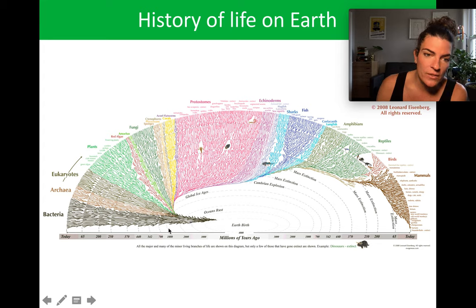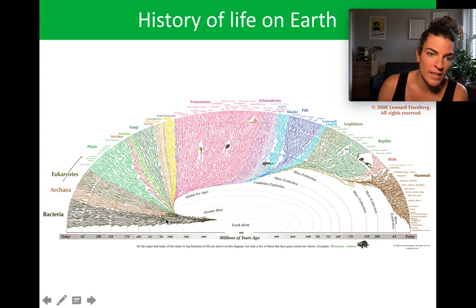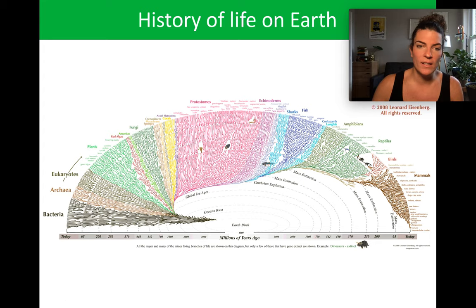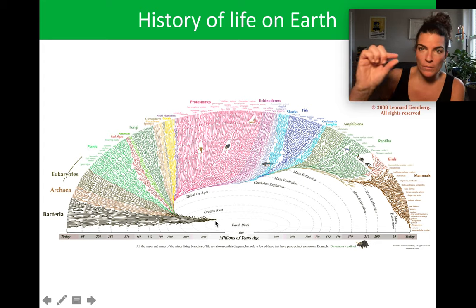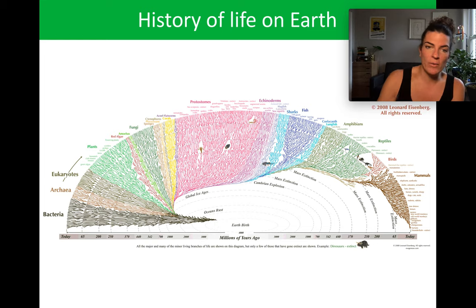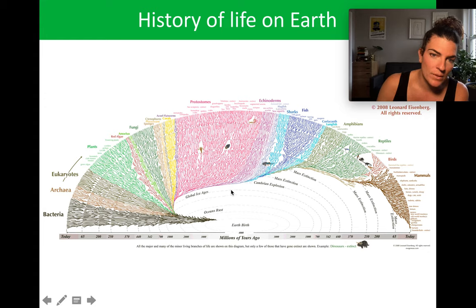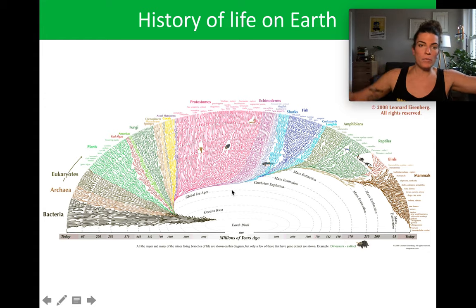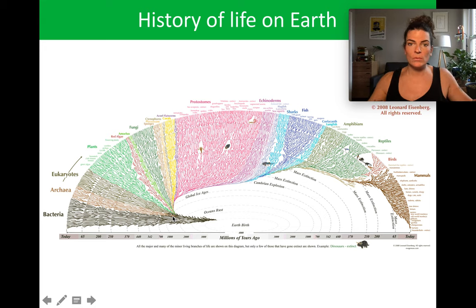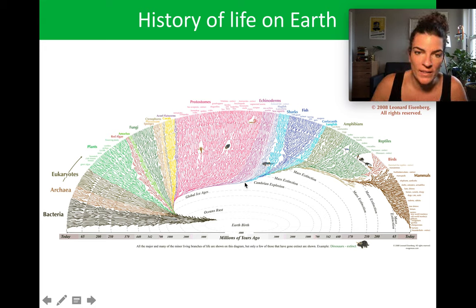Then 1 billion years ago, things are starting to diversify. But right around 550 or 542 million years ago, we go from a small number of organisms — the number represented by the width of this slice — to a dramatic increase. We have about this many organisms right before the Cambrian Explosion, and then with the Cambrian Explosion you go from this amount a billion years ago to this amount by the end of the Cambrian Explosion.